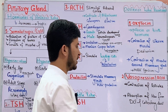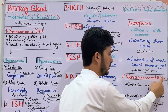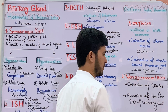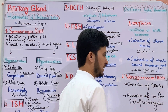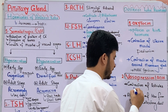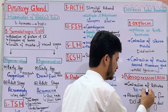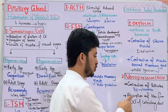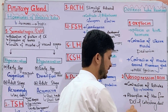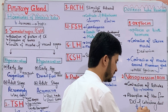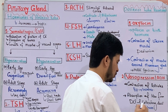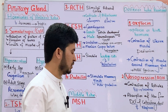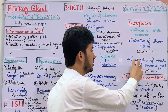The second posterior lobe hormone is ADH — antidiuretic hormone. It causes contraction of arterioles, which increases blood pressure. It also causes reabsorption of water from the distal convoluted tubule (DCT) and collecting duct in the kidney.